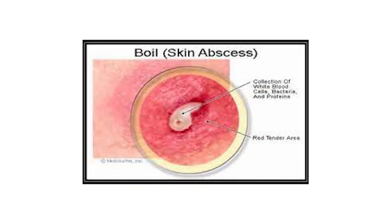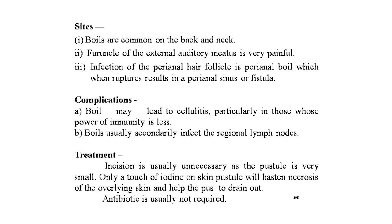Boil is a skin abscess — a collection of white blood cells, bacteria, and proteins, with a red tender area clearly seen. Sites of furuncles: boils are common on the leg, back, and neck. A furuncle of the external auditory meatus is very painful. Infections of the perianal hair follicles cause perianal boils which, when ruptured, result in a perianal sinus or fistula. Complications include cellulitis, particularly in those with reduced immunity, and secondary infections of regional lymph nodes. Treatment: incision is usually unnecessary as the pustule is very small — a touch of iodine helps necrosis of the overlying skin and assists drainage. Antibiotics are not easily required.